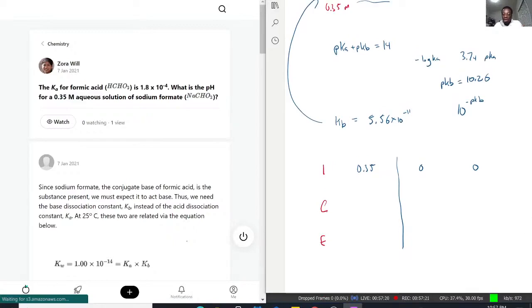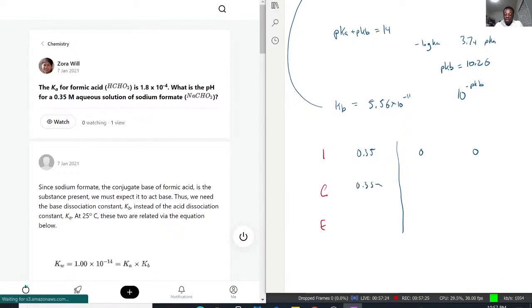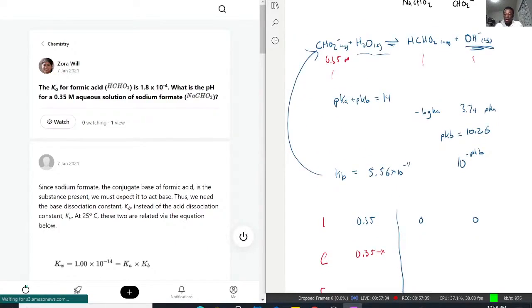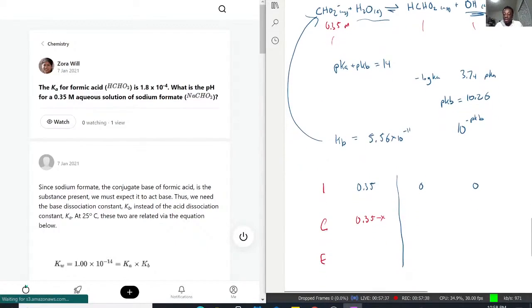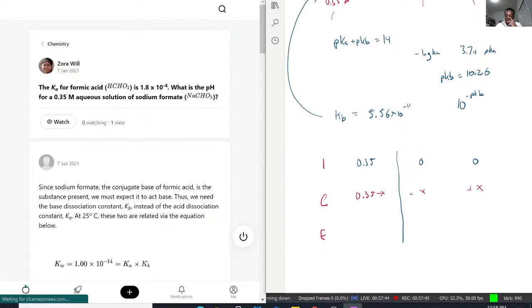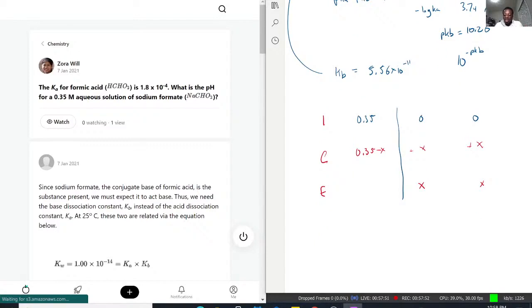So with that being said, now we have 0.35 minus X as a change. For every piece it loses, based on this formula, it's a 1 to 1 to 1 ratio. For every one loss here, one of each is gained. So it'll be plus X and plus X here. And then the total equilibrium is going to have X's. And here, this is where it now plays into effect. Because the 0.35 was such a big number compared to the Kb value, we have a rule. If the concentration is more than a thousand times greater than the Ka or Kb, we don't factor that in. It's negligible. So we really just have almost 0.35 again as the equilibrium.